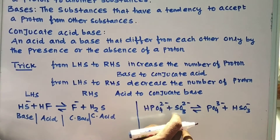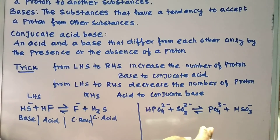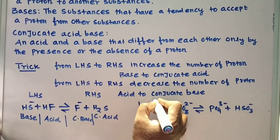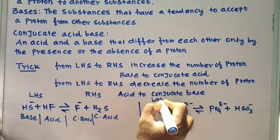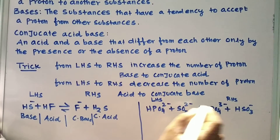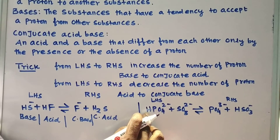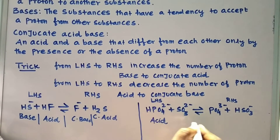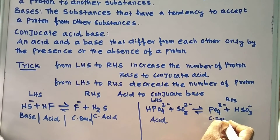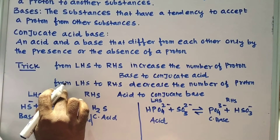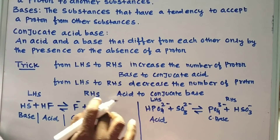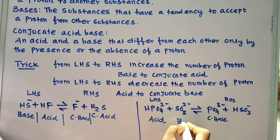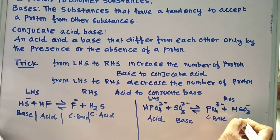Now another example: HBO₄²⁻ + SO₃²⁻ gives BO₄³⁻ + HSO₃⁻. From LHS to RHS: HBO₄²⁻ contains one proton on the LHS but loses it on the RHS, so it acts as an acid and becomes BO₄³⁻, its conjugate base. SO₃²⁻ has no proton on the LHS but gains one on the RHS to become HSO₃⁻, so SO₃²⁻ acts as a base and HSO₃⁻ is the conjugate acid.